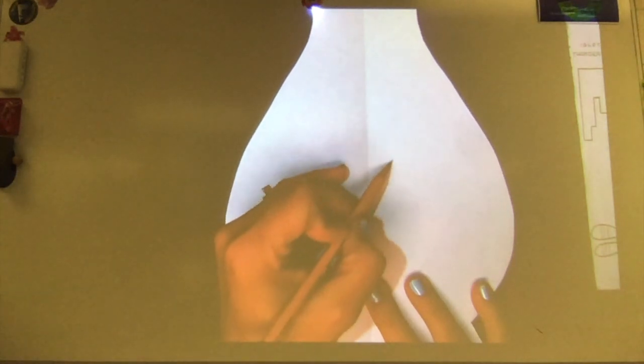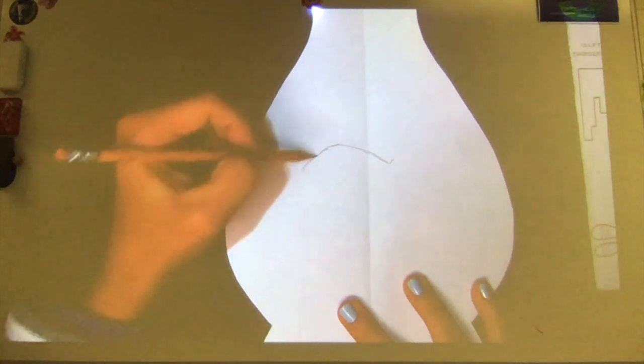And then what you're going to do is just draw them on your pot. Now think about how we've been talking about space. Mr. Shoop talked to all of you about positive and negative space.